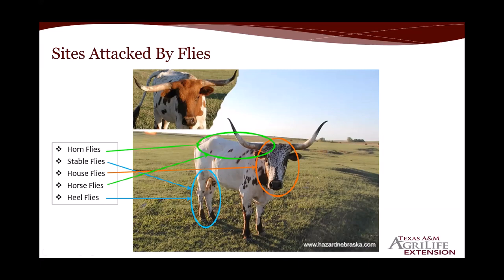Not all flies are equal — some have similar behaviors but many differences. The horn fly is found most of the time on the back of animals, moving to the neck when hot and to the belly during the hottest parts of the day. Horse flies strike on the back area. Stable flies focus on biting the legs and are currently active. Heel flies, also called cattle grubs, attach their eggs to the legs.